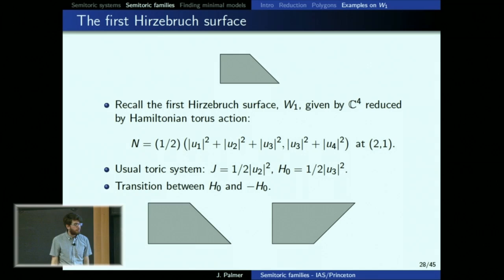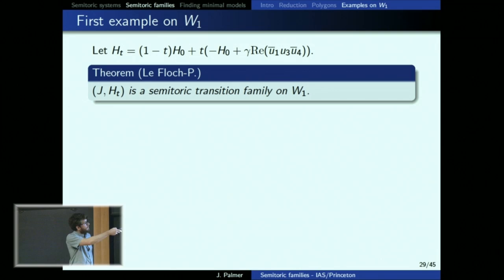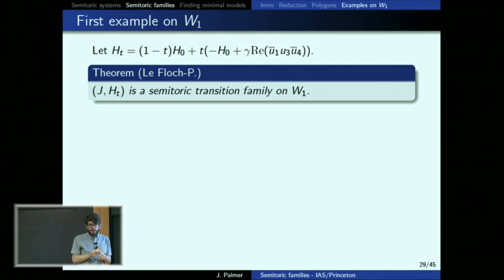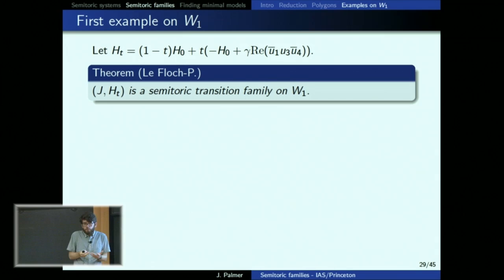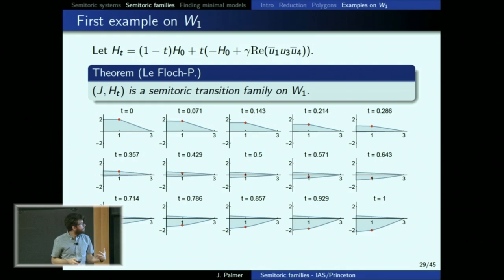We want to transition between that polygon and essentially the upside-down polygon. A reasonable first try is to transition between H_0 and -H_0. A plain convex combination doesn't work — everything collapses to a line, so t_minus equals t_plus. We fix this by putting in a term that fattens things up: a convex combination of H_0 and -H_0 plus a parameter gamma times an additional term. This term is hard to motivate, but in some sense it's the only term you could choose — it needs to show up in the Hessian, be invariant under the torus action defining the Hirzebruch surface, and be real.